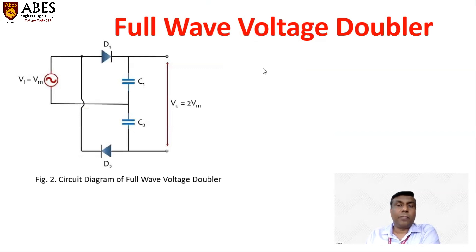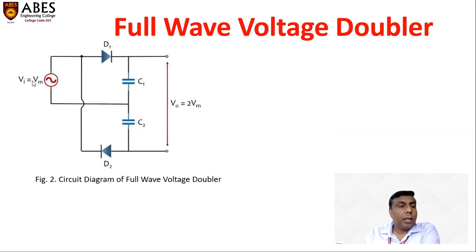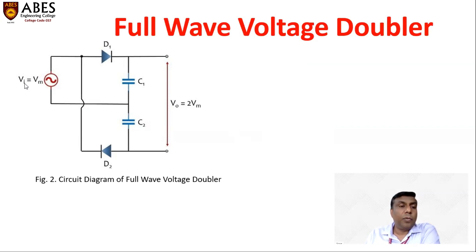This is the circuit diagram of the full wave voltage doubler. The circuit comprises two capacitors, C1 and C2, and two diodes, D1 and D2. VI is the input voltage coming after passing through the secondary winding of the step-down transformer. Since electronics deals with low voltage applications, we first need to step down the input AC voltage. This stepped-down AC voltage will have both a positive half cycle and a negative half cycle.